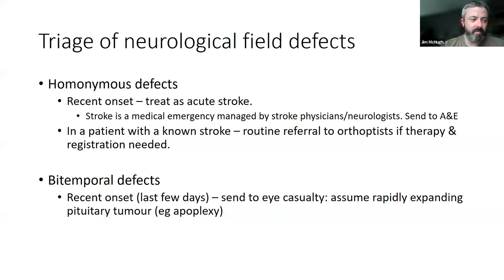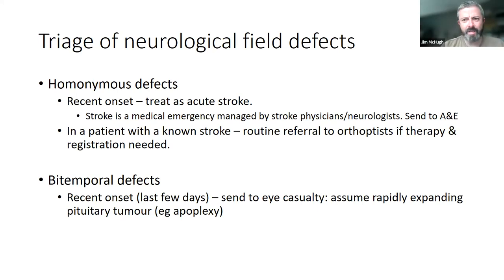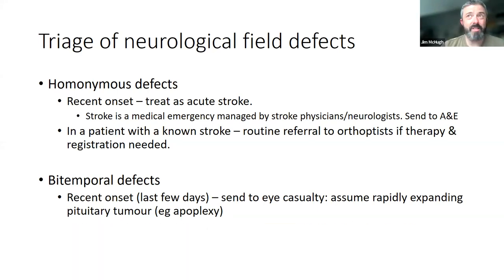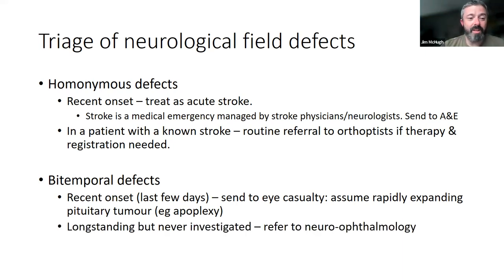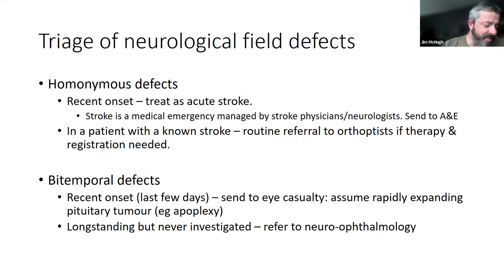For bitemporal defects and pituitary tumours: unless it's someone known to have had pituitary surgery years before and is being followed up, the assumption is they're going to need surgery. Pituitaries can get really bad really quickly if they have an apoplexy — an infarction within the pituitary — and it can double in size almost instantly, causing sudden severe pain and vision that can be completely wiped out. If very recent onset, that's an emergency — send straight to eye casualty. If it's a long-standing bitemporal defect that is a known problem and is being followed up, it's less likely to be an emergency, but if they've been lost to follow up, pituitary tumours always come back eventually and someone needs to see them — often that will be me.